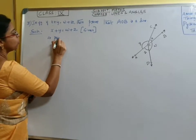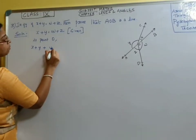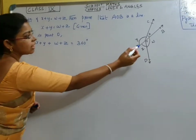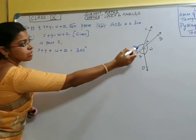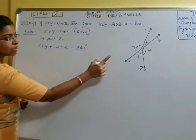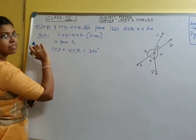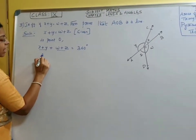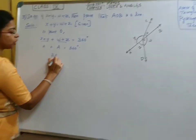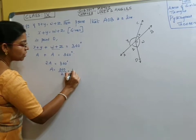At point O, you see that x plus y plus w plus z is equal to 360 degrees. We know that the angle around a point is 360 degrees. So the sum of all angles x, y, z, w at point O should equal 360 degrees. We will group x plus y and w plus z. We know that x plus y is equal to w plus z, as given. So we take x plus y as A and w plus z also becomes A. Therefore A plus A equals 360 degrees, giving us 2A equals 360 degrees.